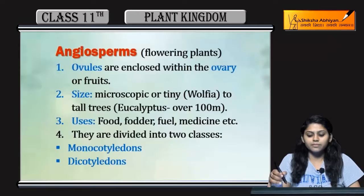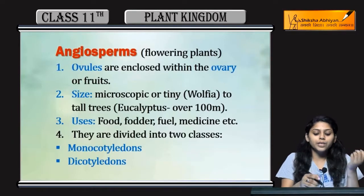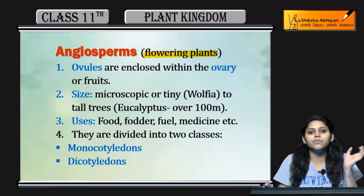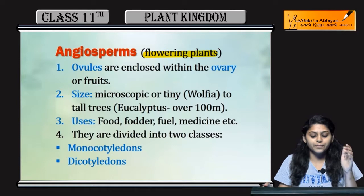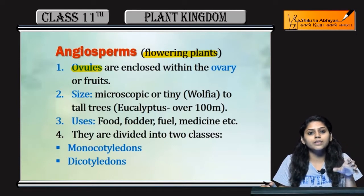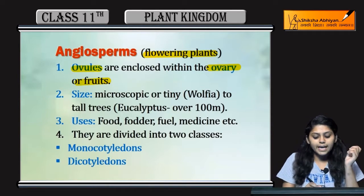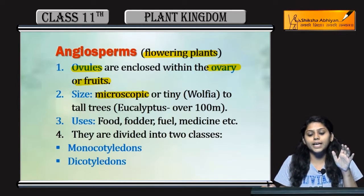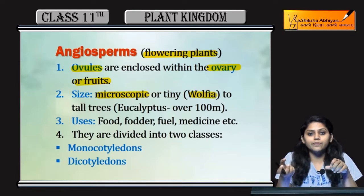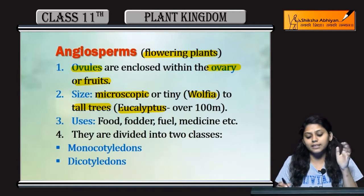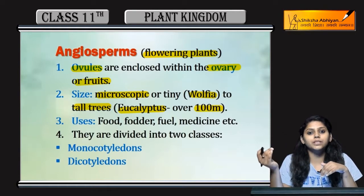Coming to angiosperms — angiosperms are flowering plants, jin plants mein flowers hoti hain woh angiosperms hoti hain. Their ovules and seeds are covered by a wall or enclosed by an ovary or fruits. They vary in size from microscopic plants like Wolfia to tall trees like eucalyptus, which may be up to 100 meters tall.